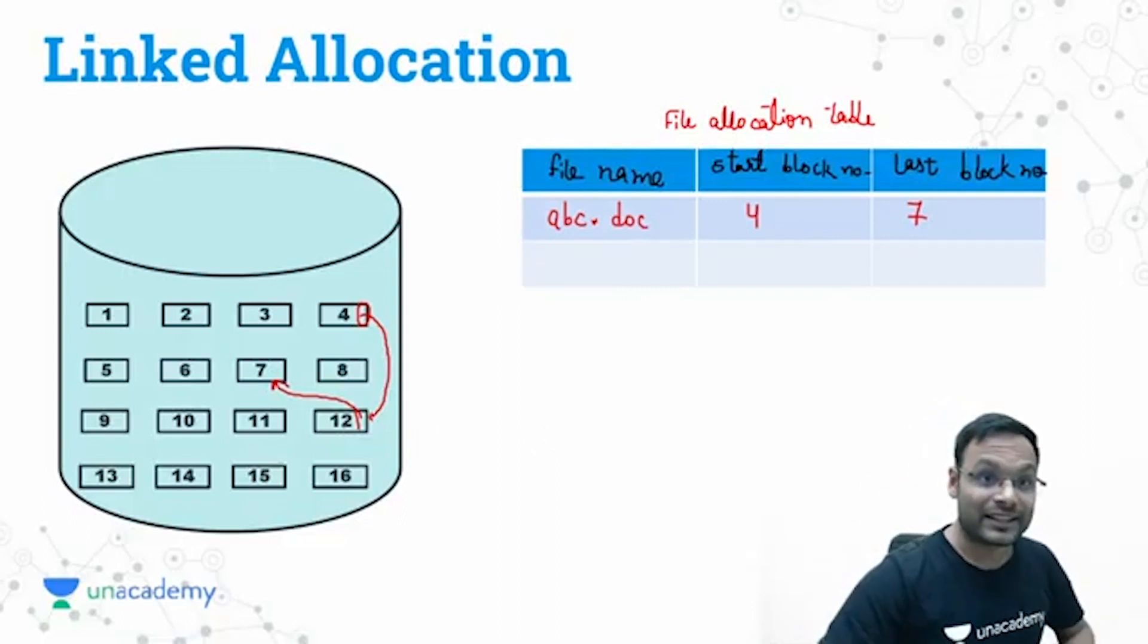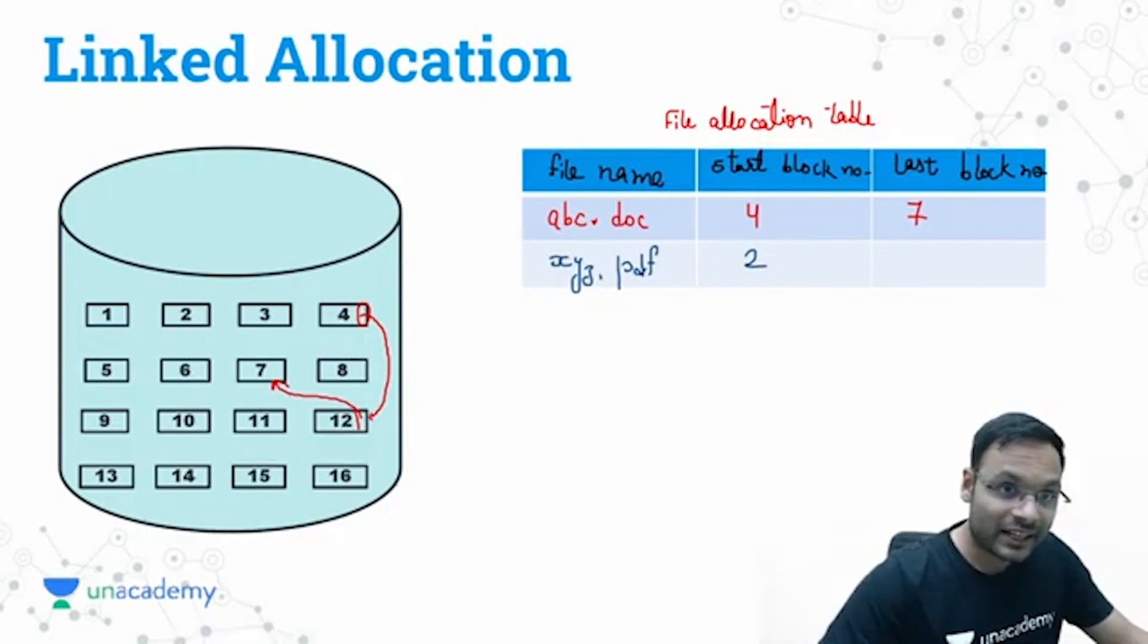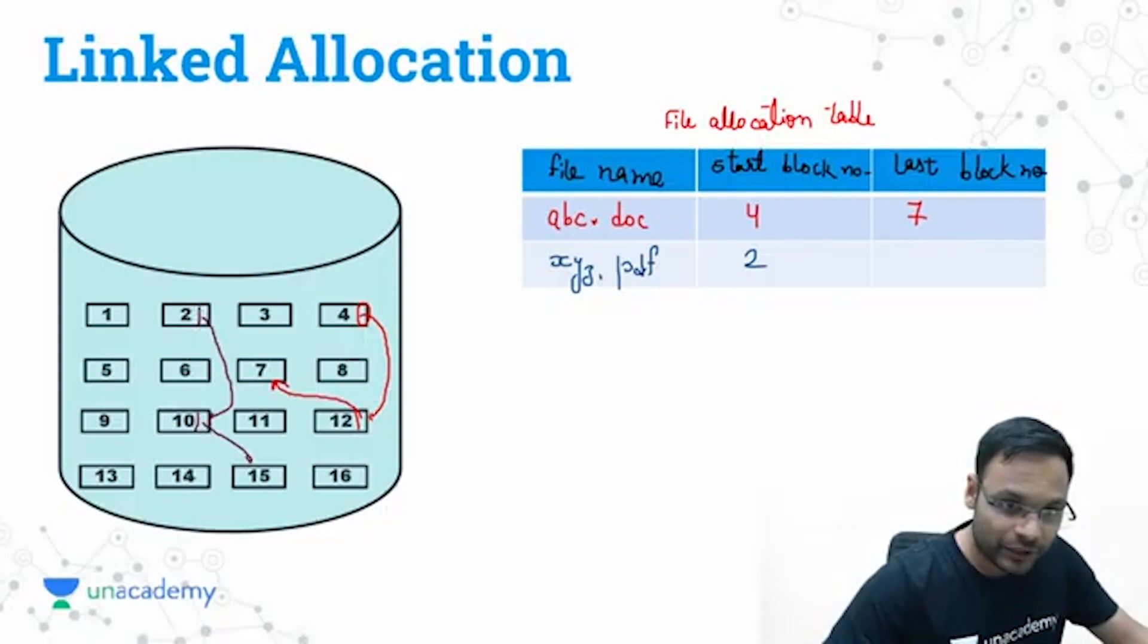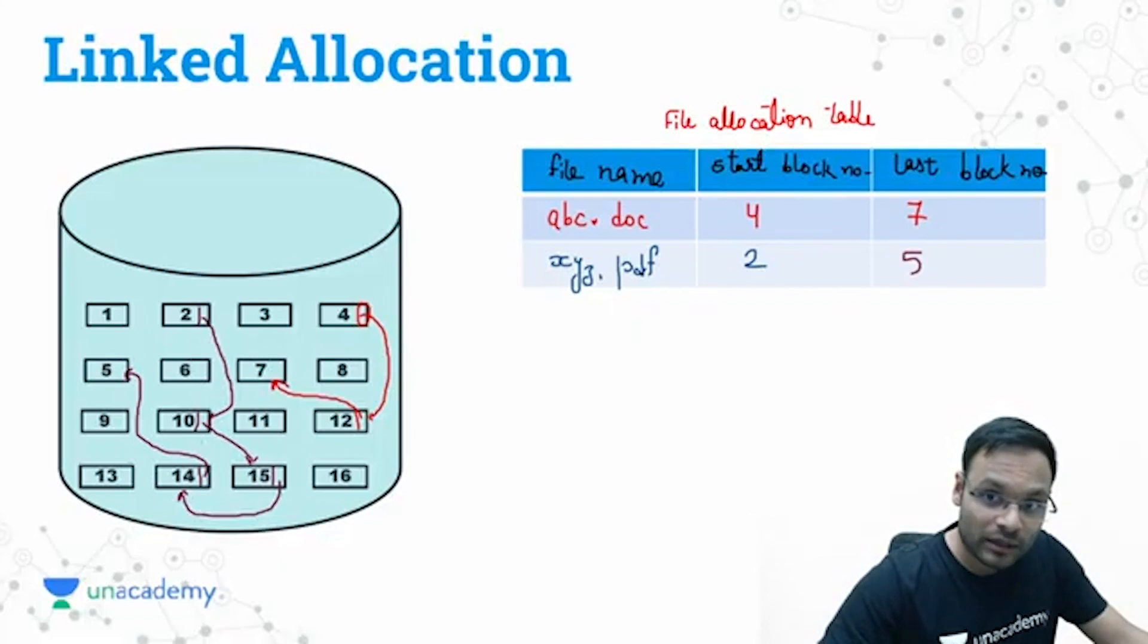Now the second file, let's say I am having a second file. Second file is having the name xyz.pdf and it requires five blocks. Let's say it is starting from two. Next block is on 10th, 10 ke bad next block is on 15th, 15 ke bad next block is on 14th, and 14 ke bad next block is stored on fifth. Five blocks done, and last block number is five.